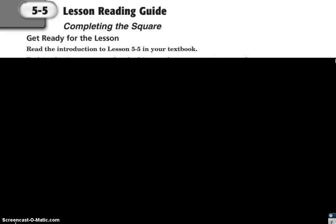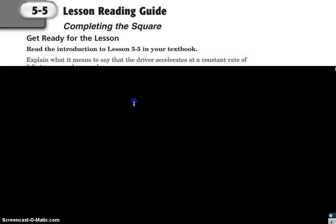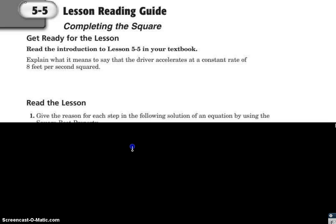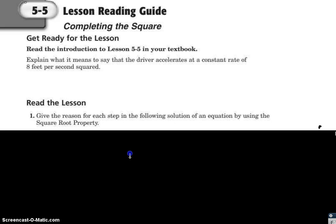Today we're going to be looking at 5-5, completing the square. Under the lesson, it says give the reason for each step in the following solution of an equation by using the square root property.